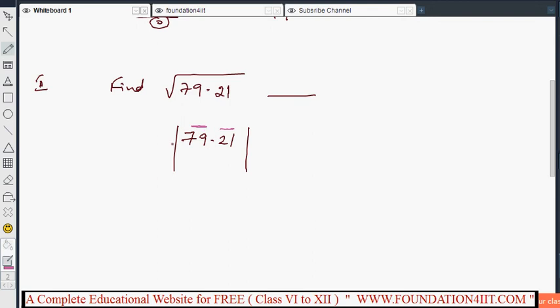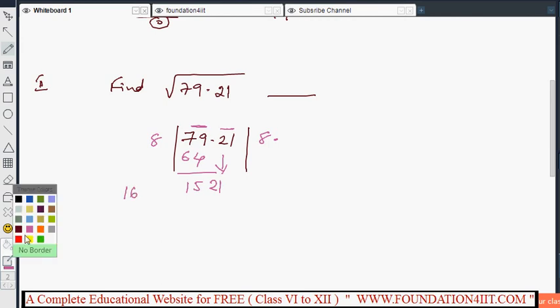79. 7×7 is 49, 8×8 is 64. Because 9×9 is 81, which will be more than 79. If you subtract, you get 15. Now I'm dragging 21 down. The 21 is soon after the point, so you also keep the point here. Now it becomes 16. 16 next place: 161. 161 divided by 9 gives 1521. If it is a perfect square, we'll get zero in the final place. The answer is 8.9.